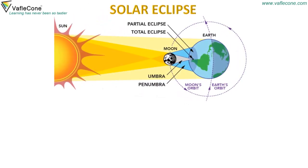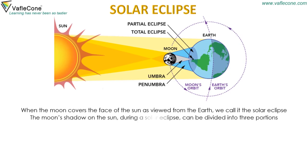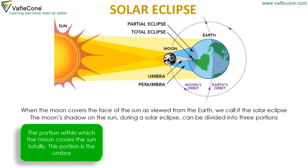Solar Eclipse. When the moon covers the face of the sun as viewed from the earth, we call it the solar eclipse. The moon's shadow on the sun during a solar eclipse can be divided into three portions. The portion within which the moon covers the sun totally is called the umbra.